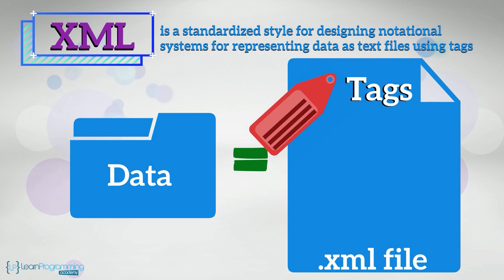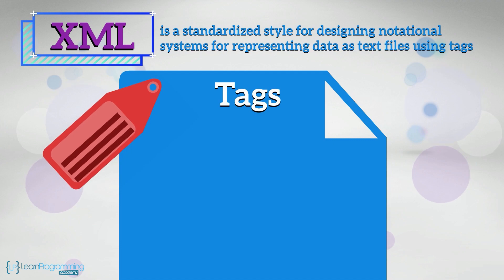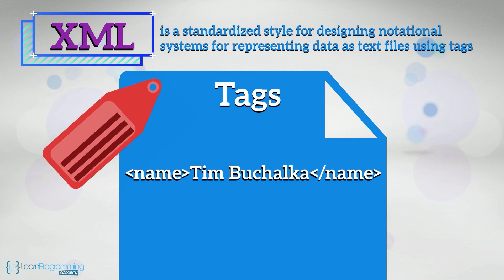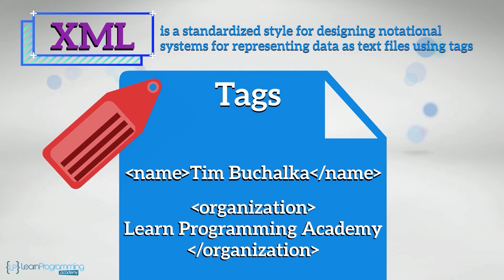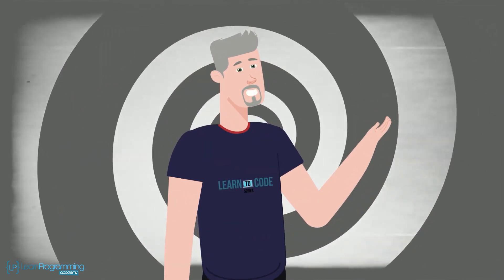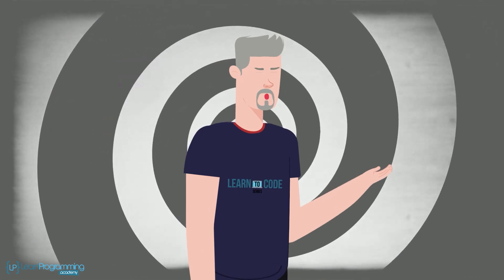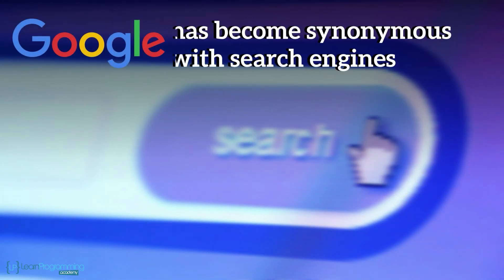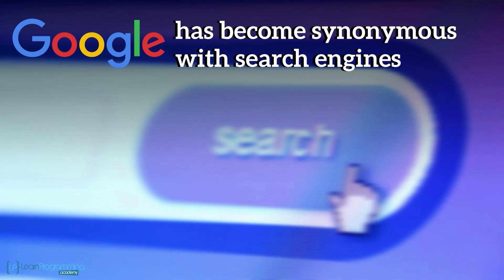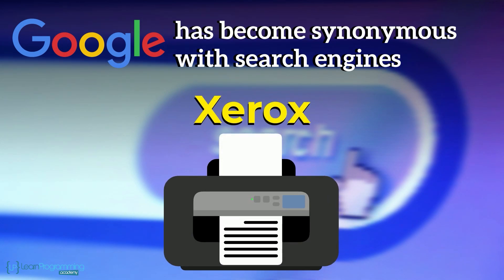Often these XML tags are given mnemonic names that make sense to humans. Two examples of XML tags could be something like: name, Tim Buchalka, /name, and organization, Learn Programming Academy, /organization. As I approach the end of this video, let me say a few general comments about the World Wide Web. The first is the notion of search engines. The name Google has become synonymous with search engines, much like Xerox was synonymous with making copies of something, but there are lots of others.